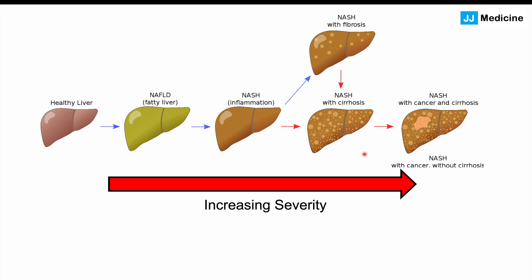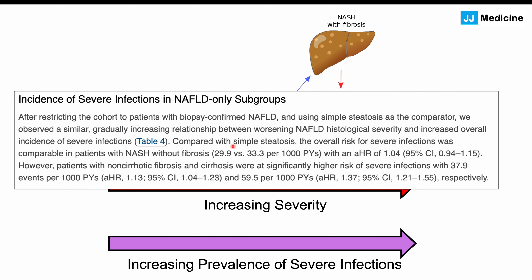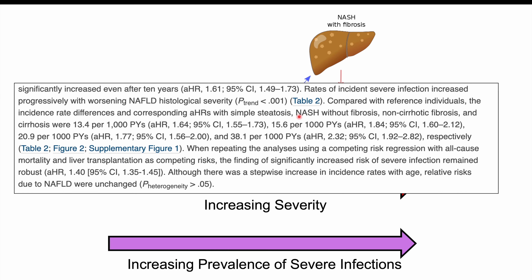Authors found that with increasing severity of the condition, there was an increasing prevalence of severe infections. Simple steatosis — just the first stage of NAFLD with the presence of fat — had a lower overall risk compared to patients with NASH. Looking further into more severe stages, non-cirrhotic fibrosis and cirrhosis were associated with an even higher risk of severe infections. The incident rates increase across each group: simple steatosis, NASH without fibrosis, non-cirrhotic fibrosis, and cirrhosis.